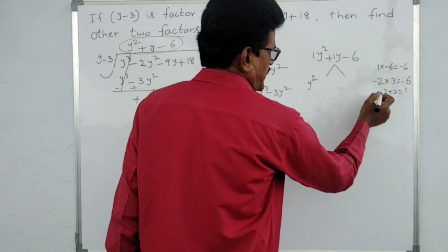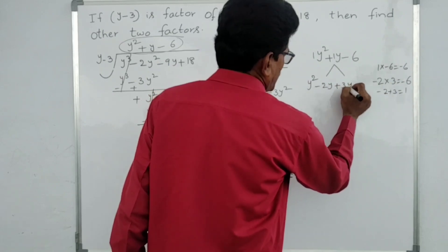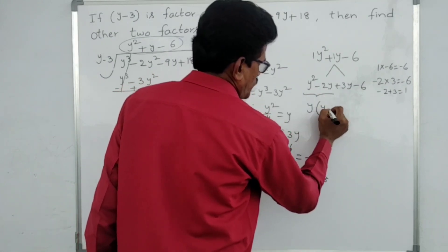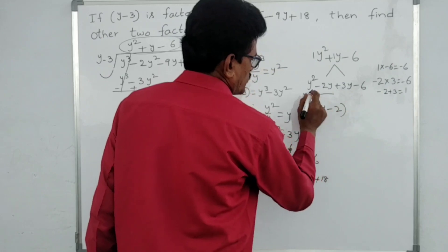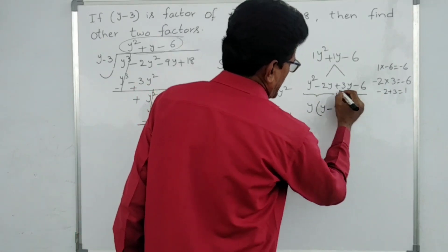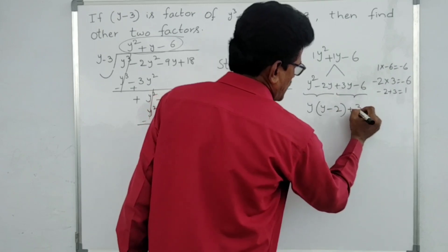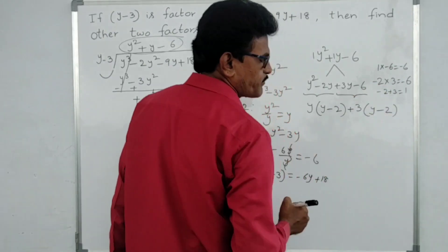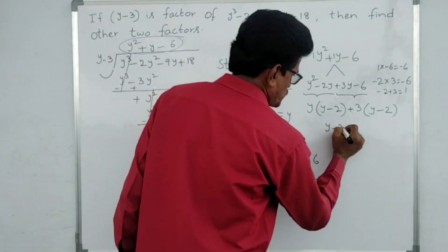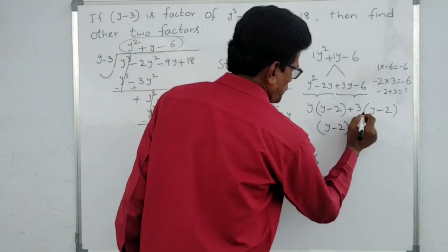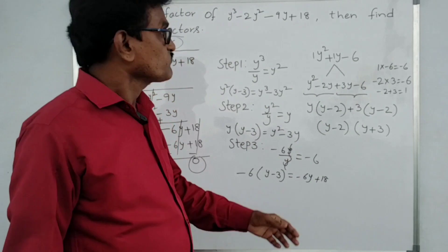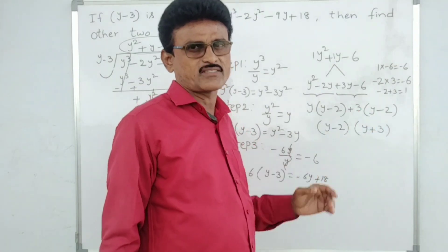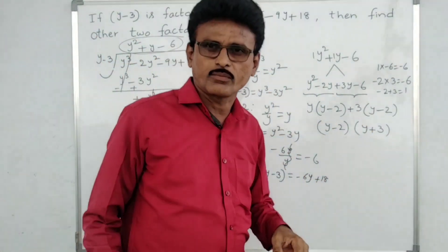Split the middle term: y² minus 2y plus 3y minus 6. Group: from the first two terms, y is common — y(y minus 2). From the last two terms, 3 is common — 3(y minus 2). So y minus 2 is common: (y minus 2)(y plus 3). Therefore y minus 3 was the given factor, and the other two factors are y minus 2 and y plus 3 — three factors total for this cubic polynomial.